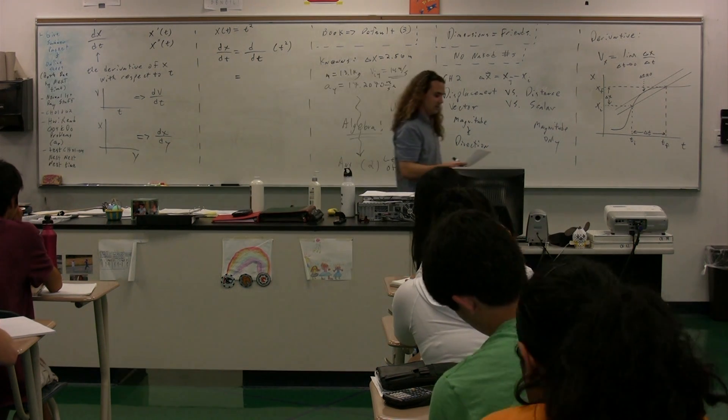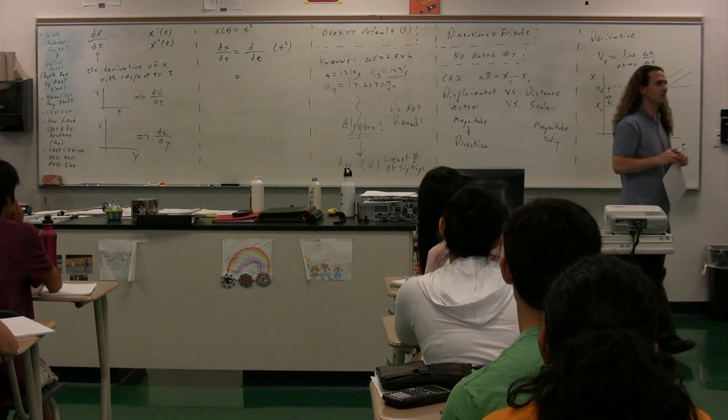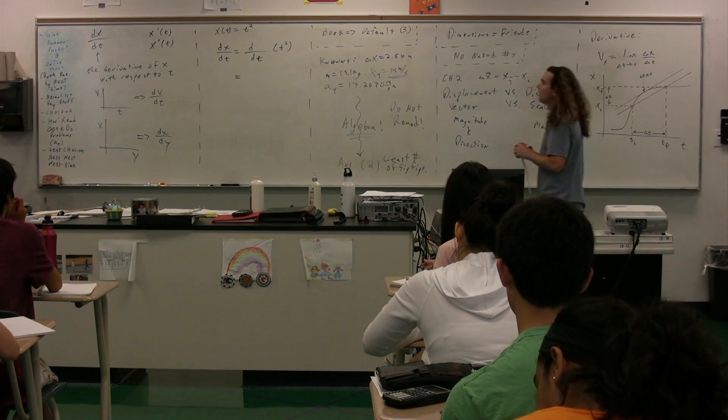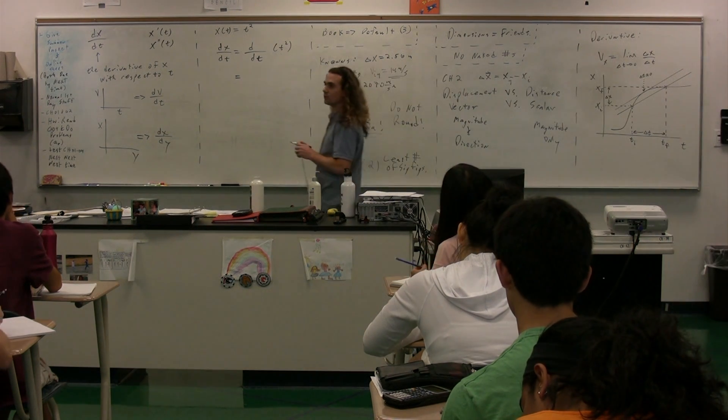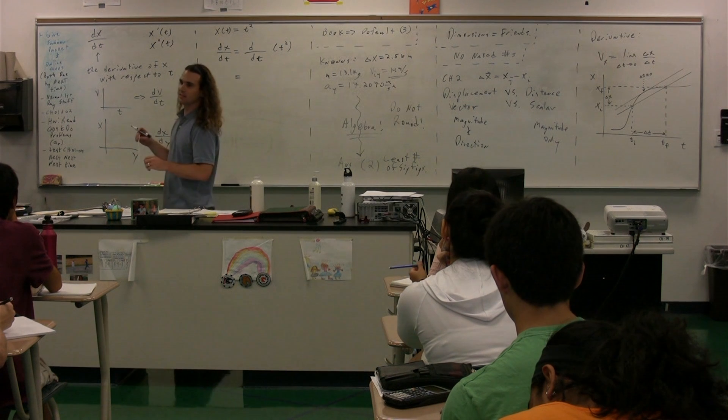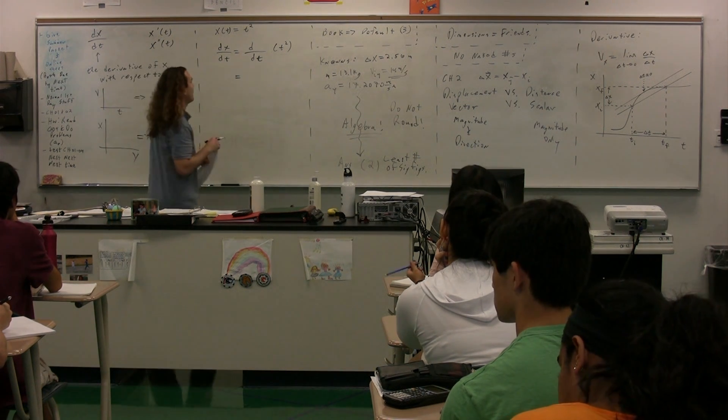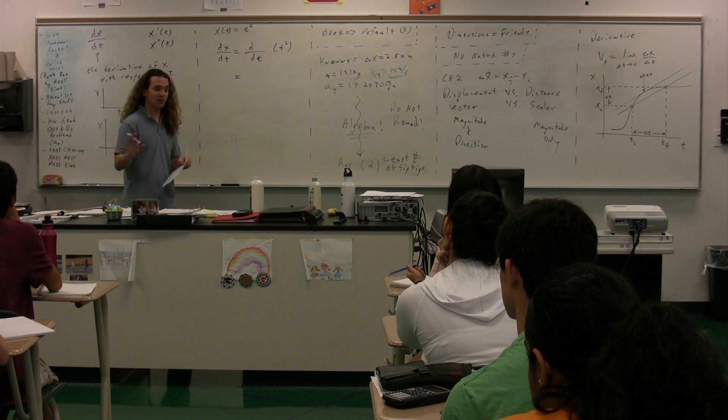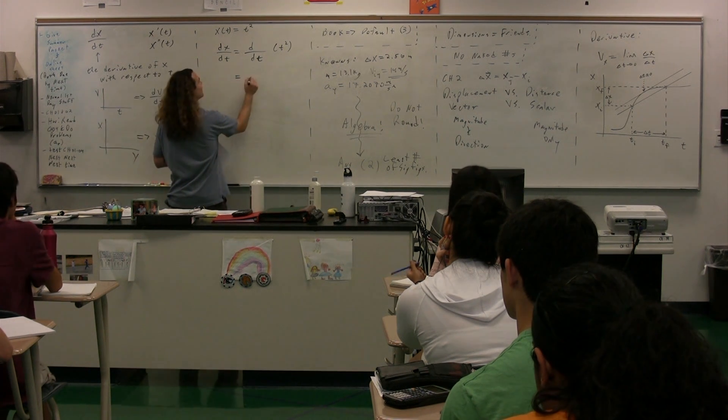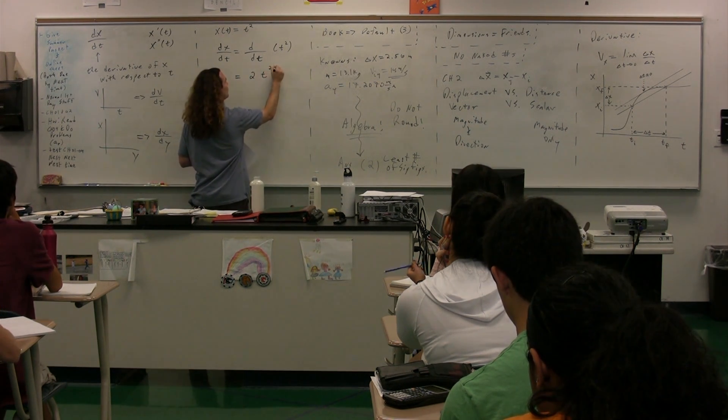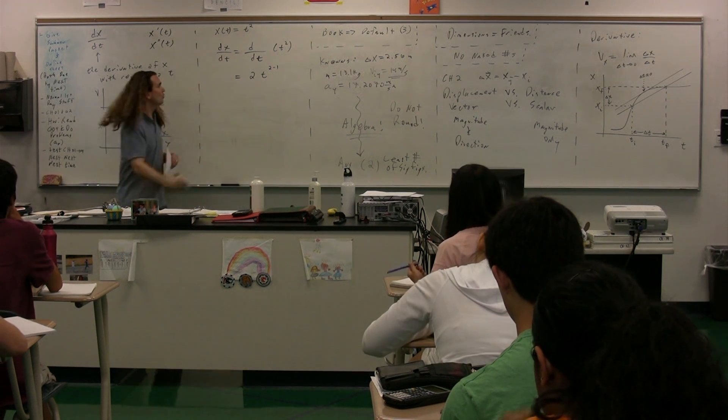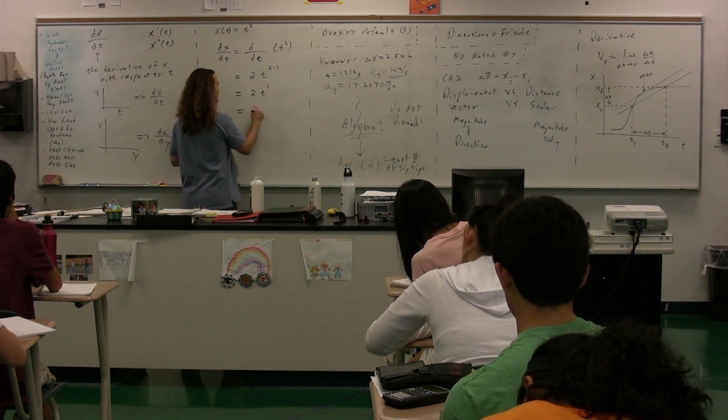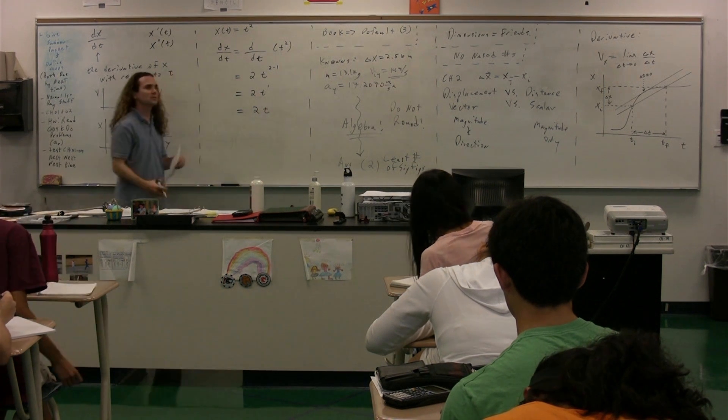So then dx/dt would just be the derivative of time squared with respect to time. And hopefully you've read it in your textbook and you can tell me what the derivative of time squared with respect to time is. 2t. Okay. I'm going to make it abundantly clear. Yes, I agree with that. But it is 2 times t to the 2 minus 1, right?